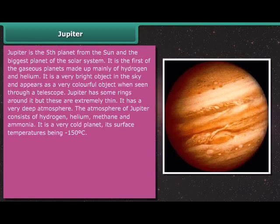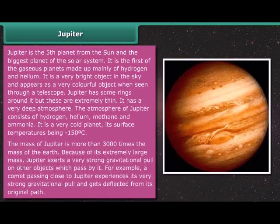It has a very deep atmosphere. The atmosphere of Jupiter consists of hydrogen, helium, methane and ammonia. It is a very cold planet, its surface temperatures being minus 150 degrees Celsius. The mass of Jupiter is more than 3,000 times the mass of the Earth. Because of its extremely large mass, Jupiter exerts a very strong gravitational pull on the other objects which pass it by. For example, a comet passing close to Jupiter experiences its very strong gravitational pull and gets deflected from its original path.